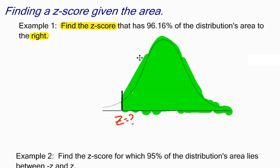Okay? The calculator assumes that the area you are giving it is the area to the left of the z-score. So I better find out what this area over here is.